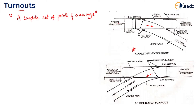Let me explain this figure. If this is your facing direction, these are the switches — left-hand switch and right-hand switch. Then these are the distance blocks. This is your main track. If you are coming in the opposite direction, it is called the trailing direction. This is your check rail, which we provide at the angle of crossing. Here also we have a check rail, and this portion is your turnout portion where it is turning around.